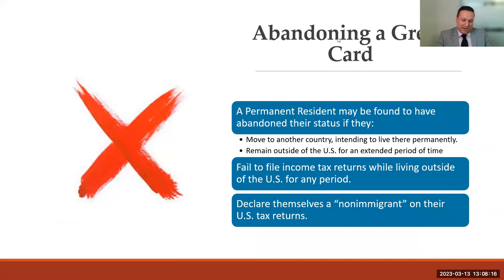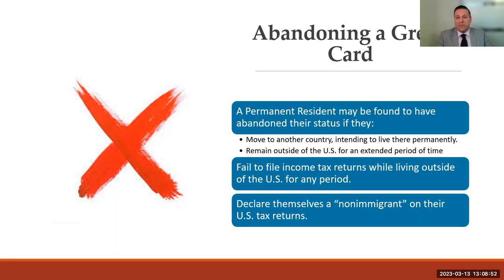It is also possible to abandon a green card. You can't come to the U.S., get a green card, leave, and use it as a tourist visa coming in once or twice a year. If you move to another country and intend to live there permanently or outside the U.S. for long periods of time, you may have abandoned the green card. Failing to file income taxes while living outside the U.S. or declaring yourself as a non-immigrant on tax returns can also trigger abandonment. Being a green card holder offers many benefits, but there are compliance obligations — living in the U.S., filing taxes, obeying U.S. law.